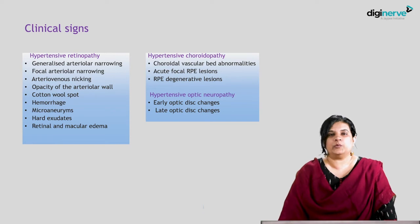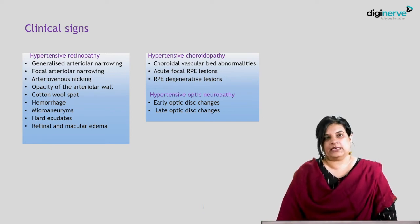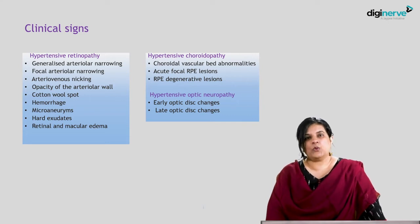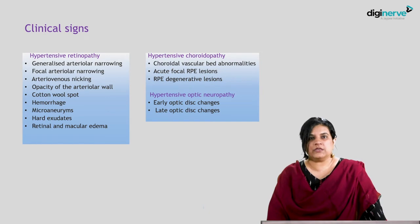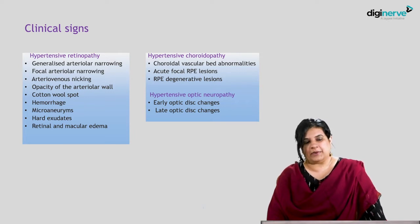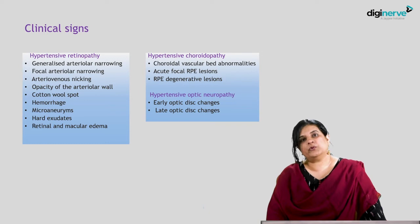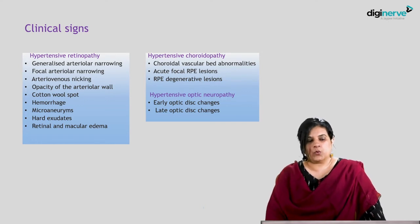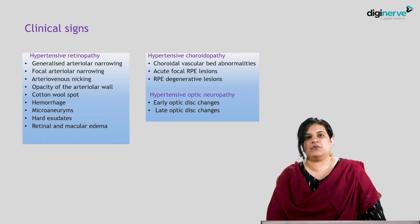Clinical signs in a patient with hypertensive retinopathy include generalized arteriolar narrowing, focal arteriolar narrowing, arteriovenous nicking, opacification of the arterial wall, cotton wool spots, retinal hemorrhages, microaneurysms in a few cases, hard exudates, and retinal and macular edema. In cases with malignant hypertension, we can also have disc edema. In hypertensive choroidopathy, there are choroidal vascular bed abnormalities, acute focal retinal pigment epithelium lesions, and degenerative RPE changes. In hypertensive optic neuropathy, there can be subtle early changes and late changes in the form of chronic disc edema.